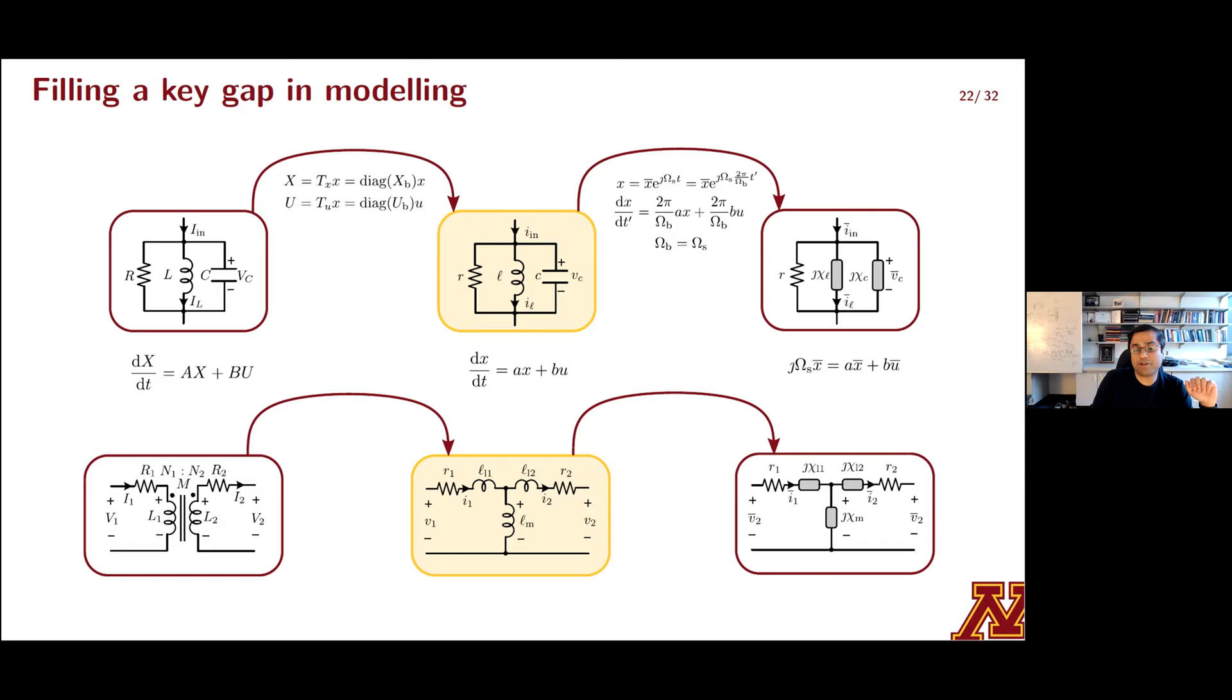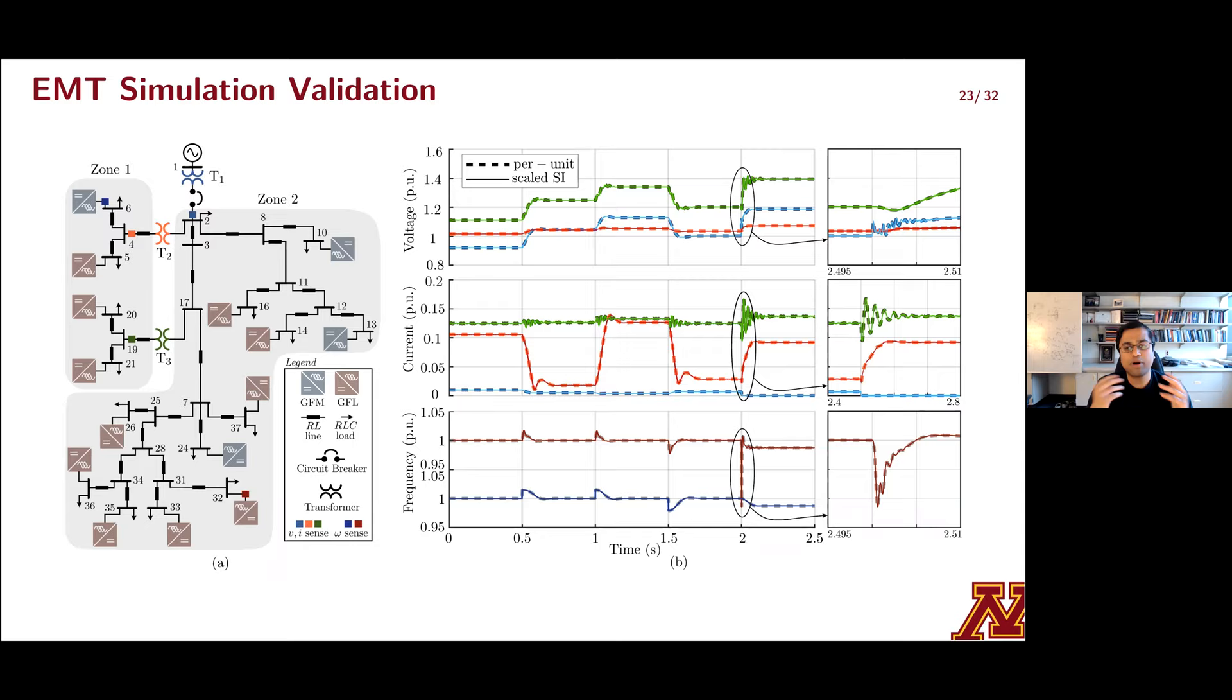So I'll end by briefly reviewing some EMT simulations here. On the left, I'm showing you a modified 37 bus network, three transformers labeled T1 through three, several GFL and GFM inverters, RLC loads, and they're all interconnected by RL circuits for lines. And we measure and report voltage and current at three transformer buses and frequencies at two inverter buses. We run a two and a half second simulation in MATLAB. Setpoint changes are implemented. We island the network at some instant of time. And you show results from two sets of simulations. One is for the SI model and one for the per unit model. And the match is not surprising. But really, you have to do things like this to keep reviewers happy.